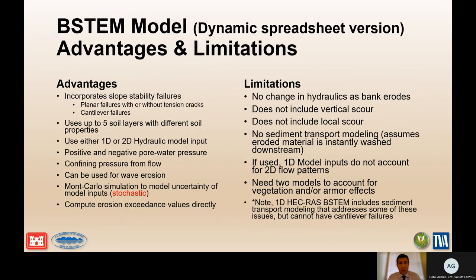Advantages of B-STEM include incorporation of slope stability failures including planar failures with or without tension cracks, as well as cantilever failures. It uses up to five soil layers with different properties and accepts either 1D or 2D hydraulic model outputs. It handles positive or negative pore pressures and the confining effect of flow against the bank, and can be used for wave erosion. Probably the biggest advantage is a Monte Carlo-type simulation to model input uncertainty and produce stochastic outputs for total bank retreat, allowing direct computation of erosion exceedance for certain distances.